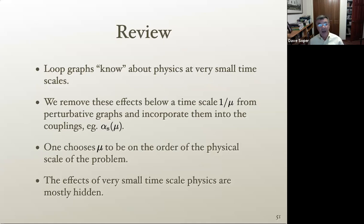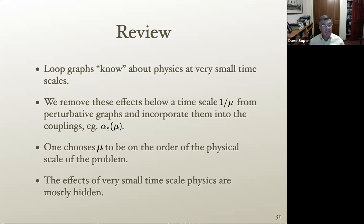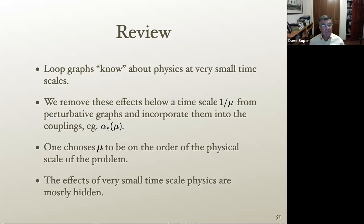To summarize: loop graphs know about physics at very small time scales. You can remove effects below time scale 1/μ from perturbative graphs and incorporate them into couplings like αs(μ). The scale μ should be chosen on the order of the physical scale of the problem. The effects of very short-time-scale physics are mostly hidden, but you can use effective field theory to analyze and potentially find such effects even at scales below those needed to directly produce new particles.